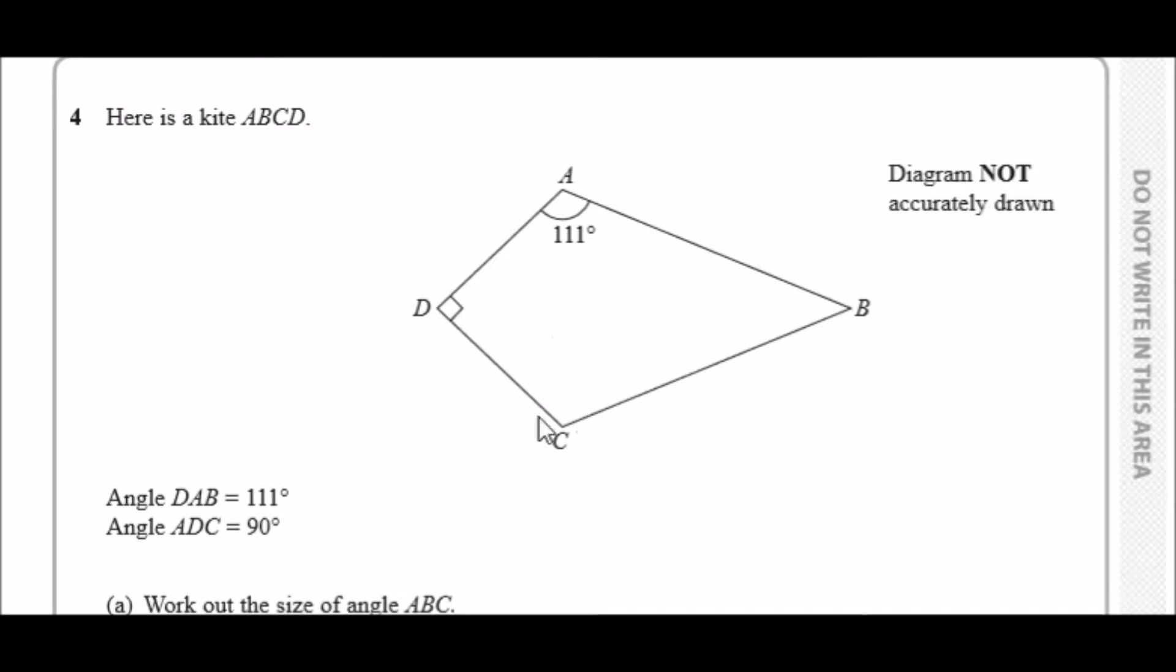Here is a kite ABCD. One property you need to know about kites is that they have identical angles at some point. This part would be considered an isosceles if you were to split this in half. Hence this would be also 111 degrees, meaning instantly we can work out this angle by summing all the interior angles.